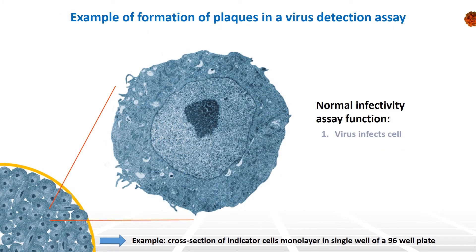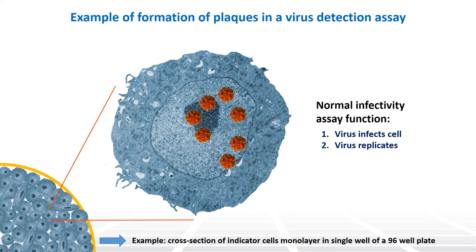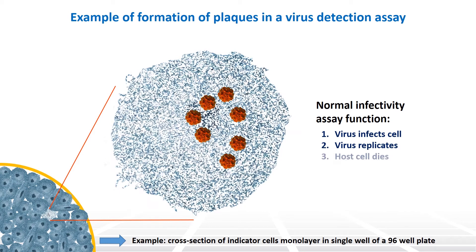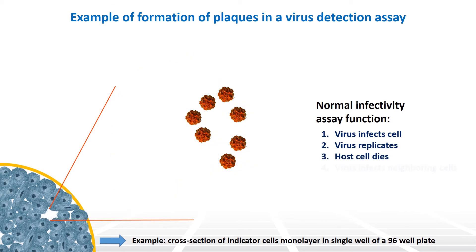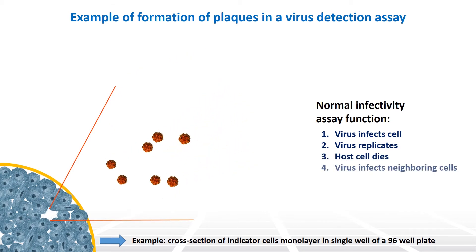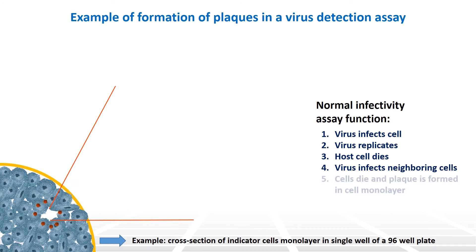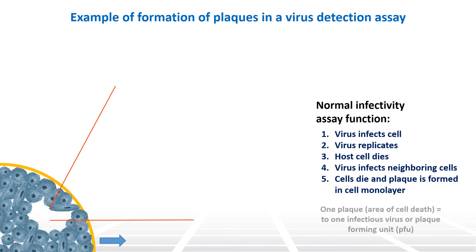Seen here is an example of a typical virus detection assay, in this case a plaque assay. Total number of plaques generated are then counted to determine virus concentration, as one plaque is essentially equal to one infectious virus.